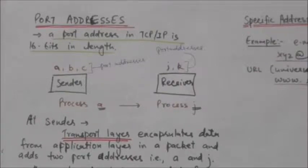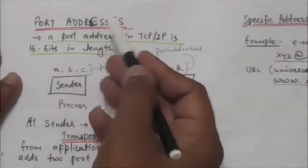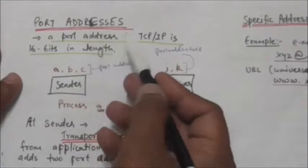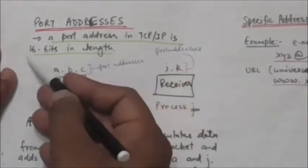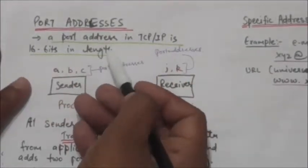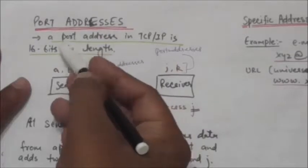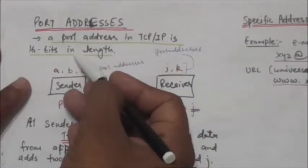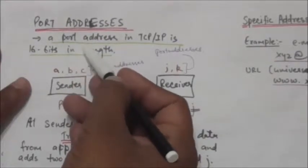Hello friends, welcome back. In this tutorial we will study about port addresses. A port address in TCP/IP is 16 bits in length. In the previous tutorial we studied about IP addresses and physical addresses.